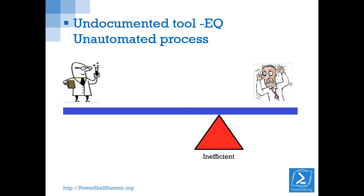If I spend a couple of hours writing a script to automate a process, I've saved dozens of hours on the other side — reduced errors, increased consistency. It's the same thing with help. If I put an hour into writing good help content for a tool, then every person who uses my tool saves an hour in discovery time. And the more people who use my tool, the greater the value of that documentation.